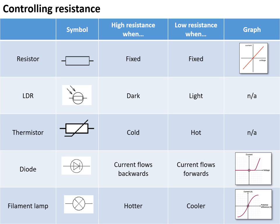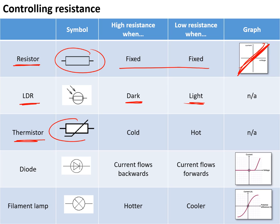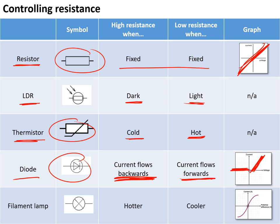In a standard resistor, resistance is fixed at all times and the graph of current versus potential difference shows direct proportion — higher voltage leads to higher current. An LDR (light-dependent resistor) has high resistance when dark, low resistance when light. A thermistor has high resistance when cold, low resistance when hot. A diode has high resistance when current tries to go backwards and low resistance when current flows forwards — current doesn't flow backwards through it. A filament lamp has high resistance when hot and lower resistance when cooler, giving a flatter graph at each end.